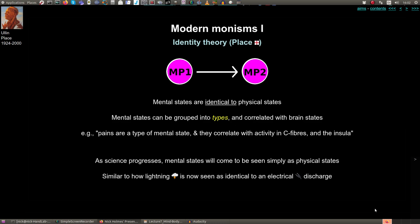As neuroscience progresses, all of the mental states we are familiar with will come to be seen as identical to physical states. This is a bit like how lightning of the past was not thought to be caused by Thor, the god of thunder; instead lightning is simply the same as an electrical discharge that occurs between the ground and the clouds.